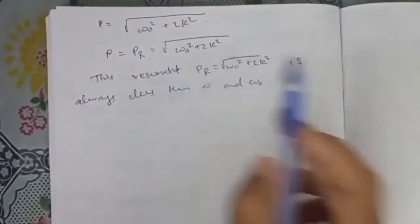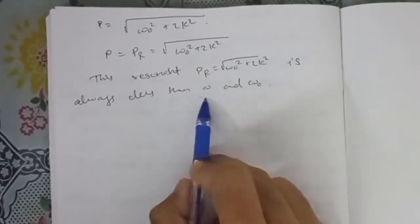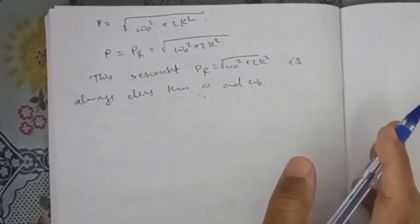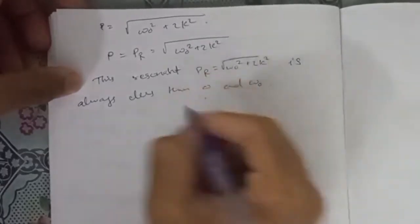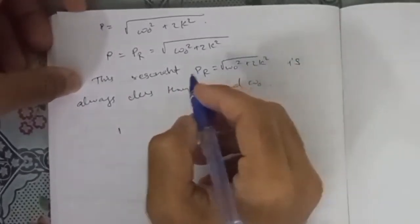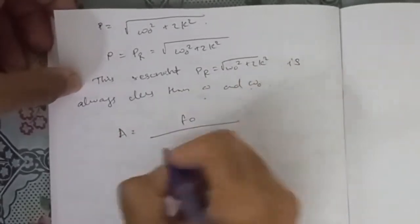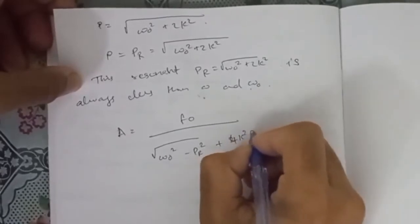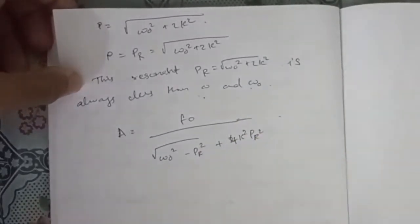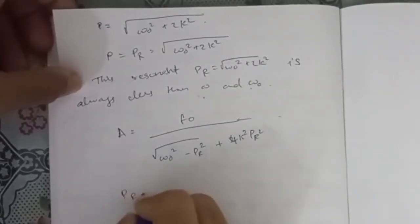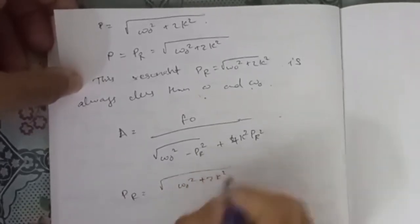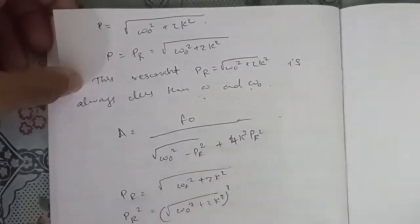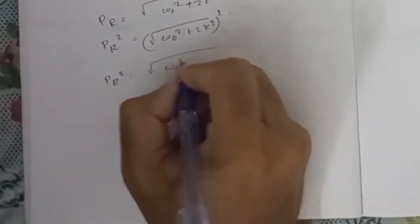Now we have to substitute into the first equation. The amplitude equation is A equal to f0 divided by the square root of (omega_0 squared minus PR squared) whole squared plus 4k squared PR squared. PR is equal to the square root of (omega_0 squared minus 2k squared), so PR squared equals omega_0 squared minus 2k squared.